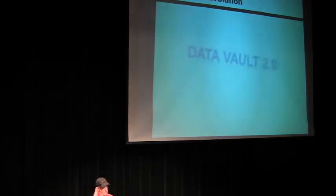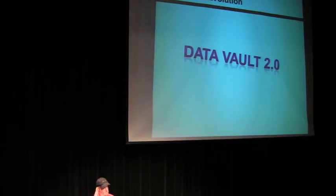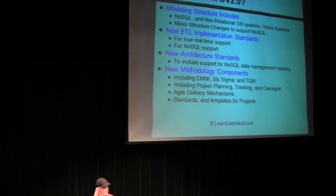So the next evolution was Data Vault 2.0, because everything's got to have a 2.0, right? So what was the difference? In 2.0, they changed the modeling structures and tried to adapt this data warehouse modeling technique to be able to work with NoSQL databases and things of that nature, make it CMMI compatible and a whole bunch of other kind of boring stuff.